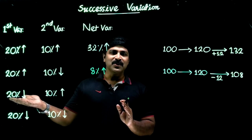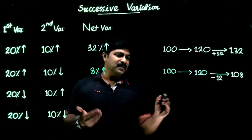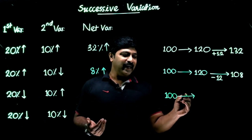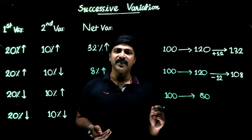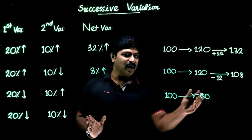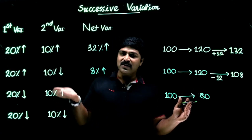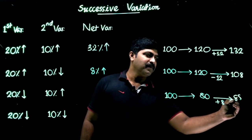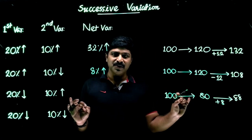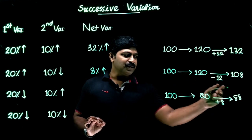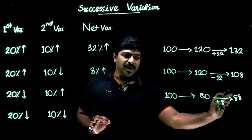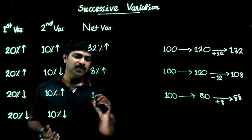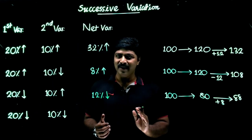Third example: 20% decrease, then 10% increase. Starting from 100, a 20% decrease gives us 80. In the next step, 80 is the base of this operation. The second variation is 10% increase — 10% of 80 is 8. So it becomes 88. Observe: the initial value is 100 and the resultant value becomes 88. The net variation is a deduction of 12, so the result is 12% decrease.